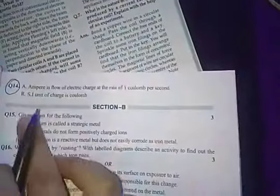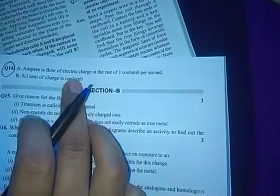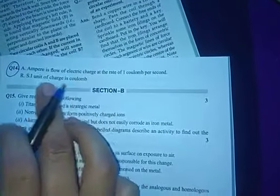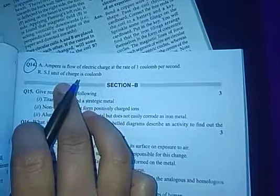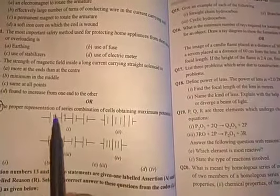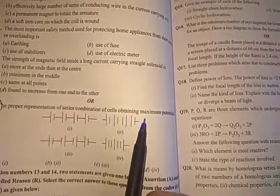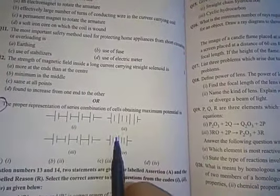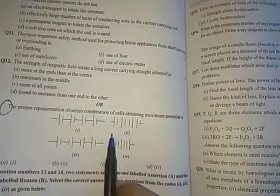Next question is this. Ampere is flow of electric charge at the rate of one coulomb per second. SI unit of charge is coulomb. So whether it is assertion or complete it with the assertion or reason. Now the next question is this one. Proper representation of series combination of cells obtaining maximum potential is? What is the proper representation to get the maximum potential?